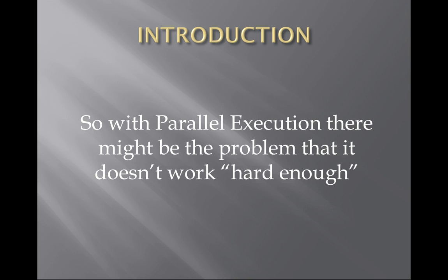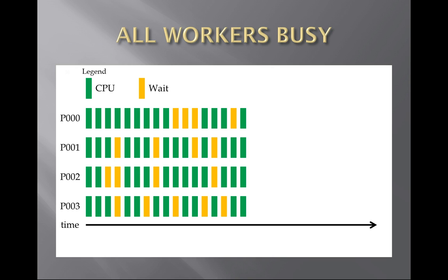Since parallel execution tries to speed up processing by spreading it across several processes, you might have the problem that not all of them are working all the time. This is exactly what parallel execution skew is about — you have significant idle time for at least some of the processes. As long as you do not achieve an even work distribution where all involved processes are working most of the time, you simply do not achieve what might be possible with parallel execution. Here is a graphical representation of the database time that the involved processes spent. Each box represents a unit of time: green boxes represent CPU time and yellow boxes represent active wait time, typically waiting for IO.